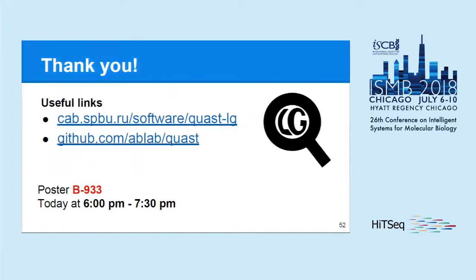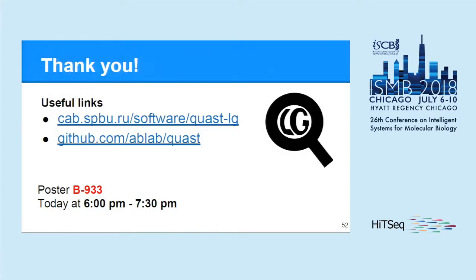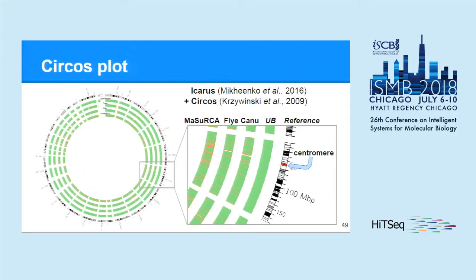Question from audience: Just to clarify, with the Masurca assembly, you're saying that among the larger contigs those are pretty accurate, but there was a long tail of really short contigs that were really inaccurate? Response: They're probably not inaccurate, because centromeres are hard to assemble, and what is present in the reference genome may not be as correct as it seems. So Masurca may have assembled something different from the reference, and we report it as misassemblies because of the reference issue.